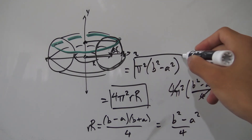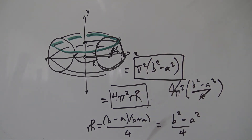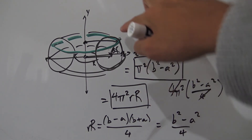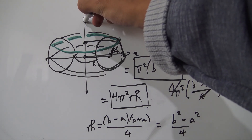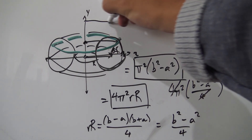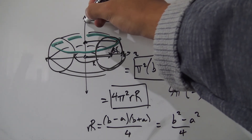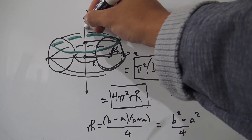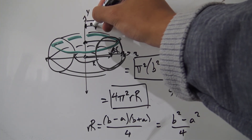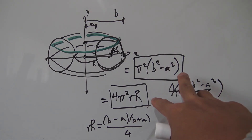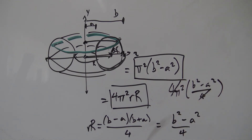So this is the second result: the surface area of the donut equals π²(b² − a²), where b is the outer radius and a is the inner radius. Those are the two formulas you can use to find the surface area of any donut. I hope you guys enjoyed, and I'll see everyone next time.